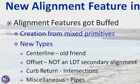Of course, we also have things like pipes and pipe networks, and there are a number of other utility uses for this. We also have a miscellaneous alignment type, and I would expect that in the future there might be some other new types.